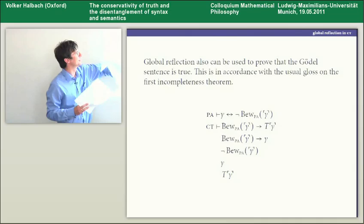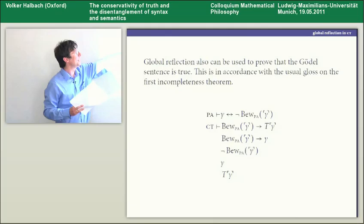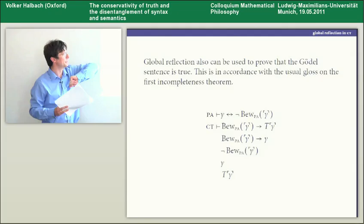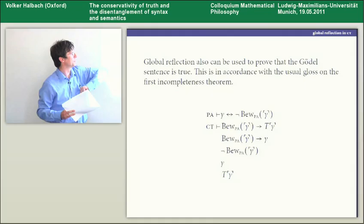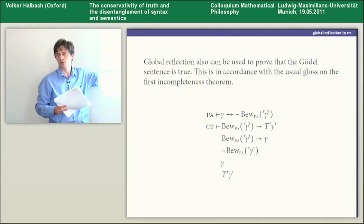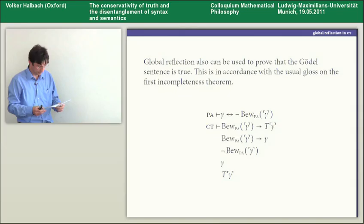Non-conservativity can also be proved by appealing to the first incompleteness theorem. If gamma is the standard Gödel sentence claiming of itself that it is not provable in PA, then using global reflection and the T-sentence provable in CT, one obtains local reflection. Together with the diagonal property, this gives not-provable(gamma), which is gamma itself — so CT proves the Gödel sentence is true. Everything seems fine.